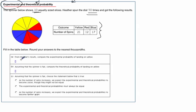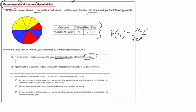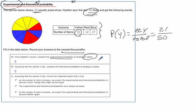First, from Heather's results, compute the experimental probability of landing on yellow. The probability of yellow is the number of yellows out of the total. How many times did we end up with yellow? 21 times. How many times did we spin it? 50. It says round to the nearest thousandths, so using a calculator, that's going to be 0.42. So our experimental probability of yellow is 0.42.